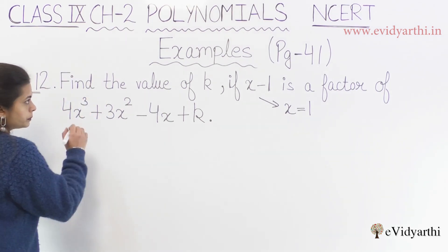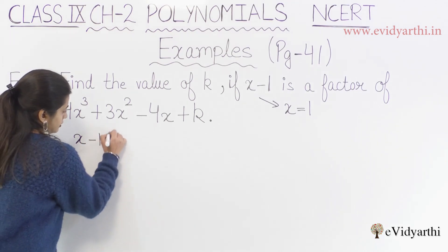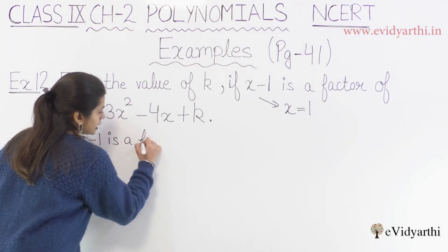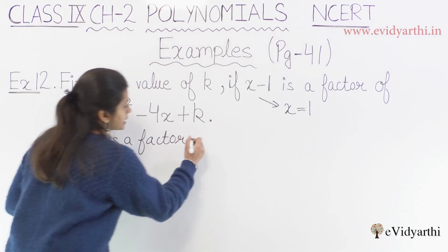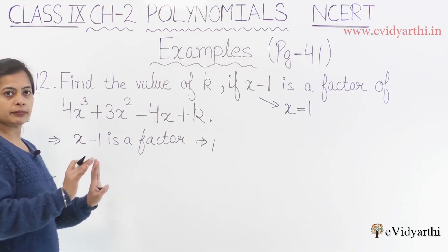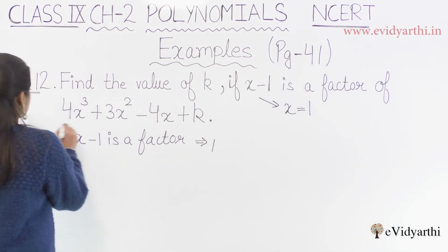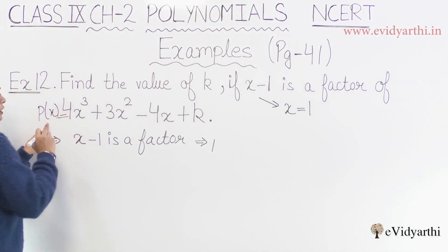So we know x-1 is a factor, which implies I can write that if we have a polynomial, the first step is to give it a name. Let's say p(x). So this is a polynomial, p(x).